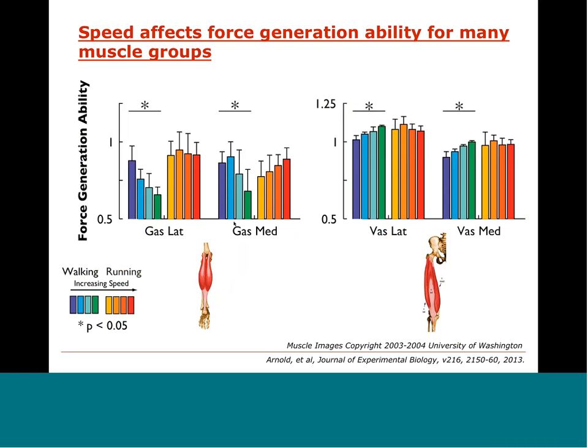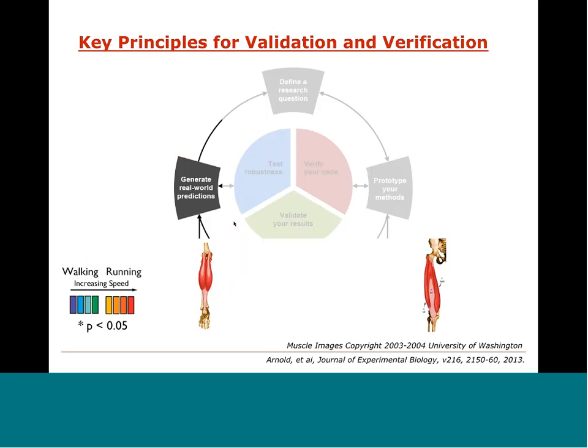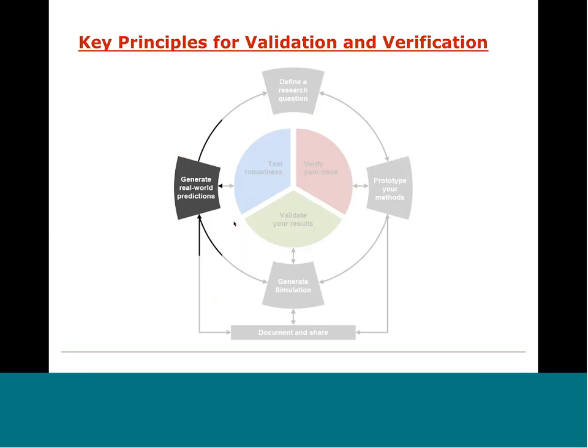The next key principle is making predictions and hypotheses that you can test in the real world. Can you generate hypotheses we wouldn't have been able to come up with just by observing or experimenting? Or can you predict de novo phenomena we observe in the real world? This is important for validation and a big opportunity for our field — this is how we can really make an impact and convince the skeptics. Sometimes it can take decades, but this is how we change the field and change rehab outcomes.